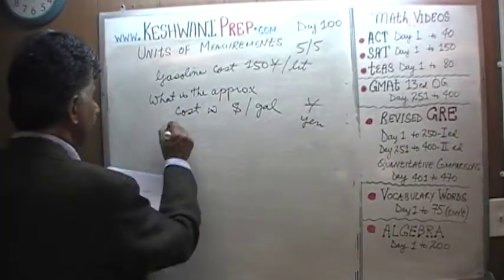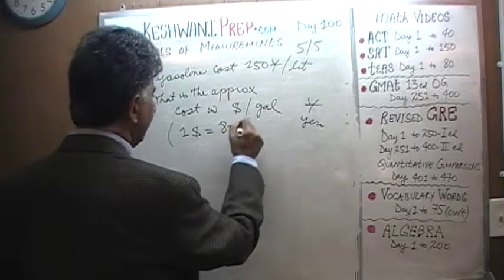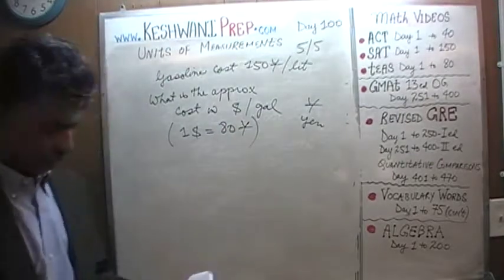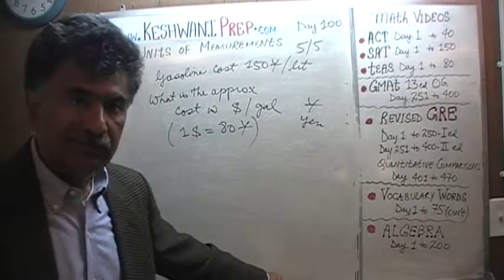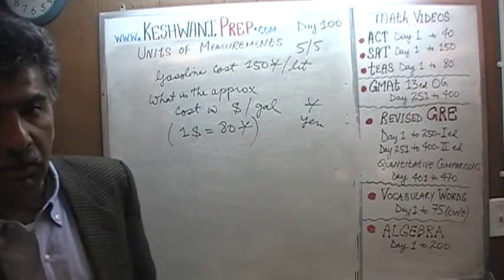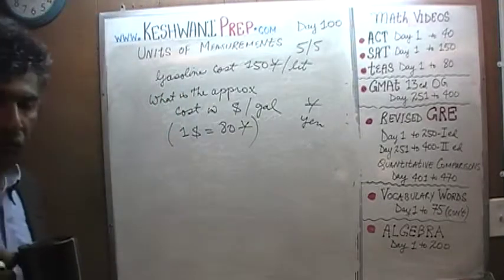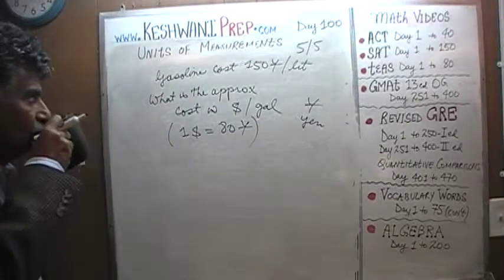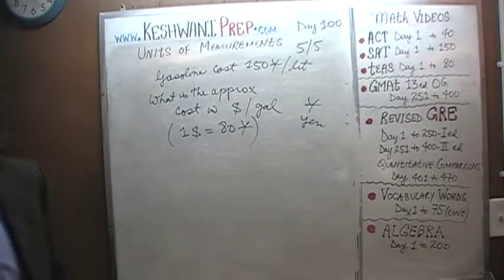They do tell you, the problem tells you that one dollar equals 80 yen. That is given. What I want you to do is pause the video, do it yourself, and then once you have done it yourself, compare your work against the work that we will do together in a few seconds time. Go ahead and pause the video.